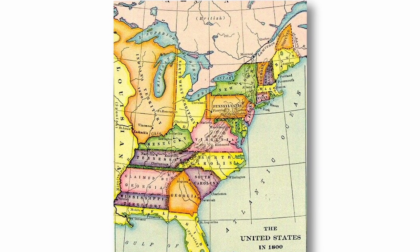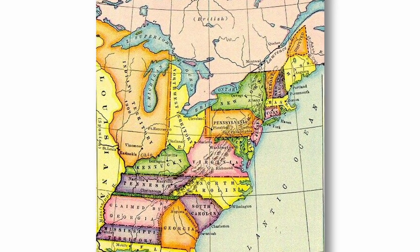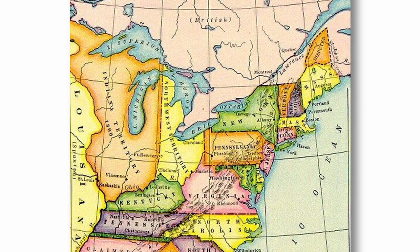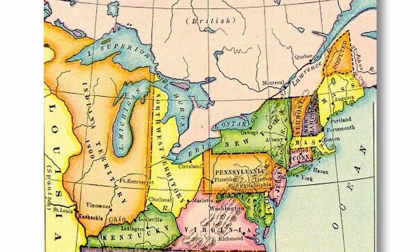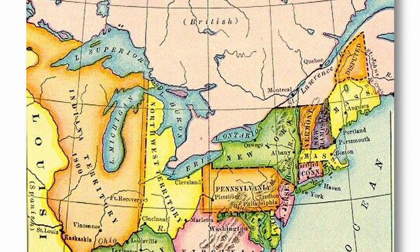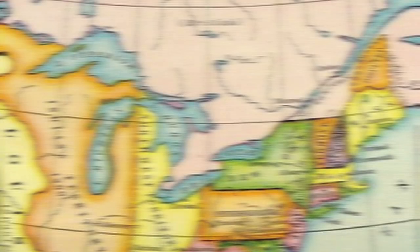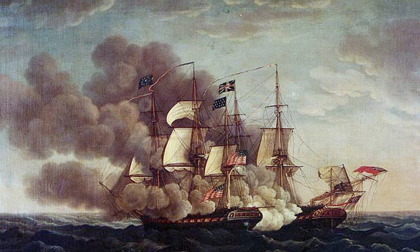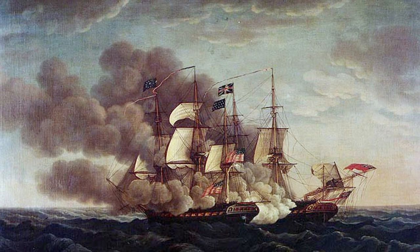The Great Lakes region was going to be the key for the Americans to take Canada, since an invasion through New England was not in the cards due to the region's hostility to the war. On paper, the war in the Great Lakes frontier should have been decisively in the Americans' favor, and the war at sea should have been in Britain's favor. But very little went as planned in this war.